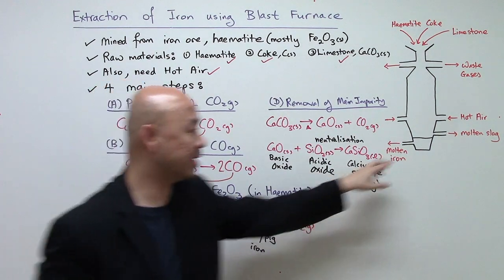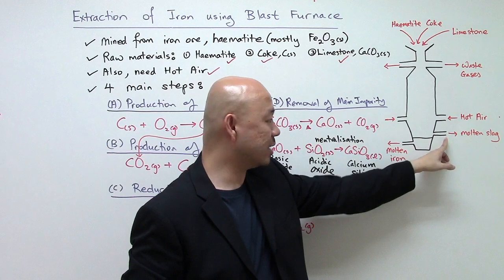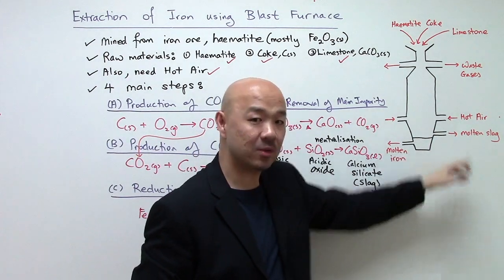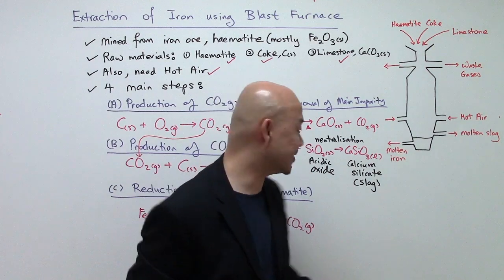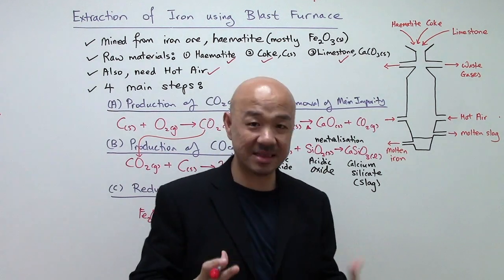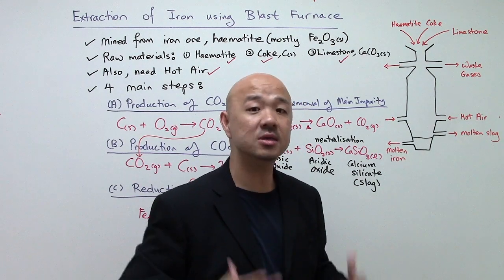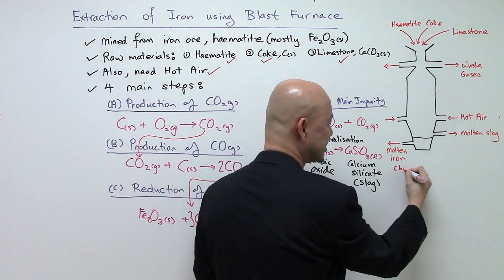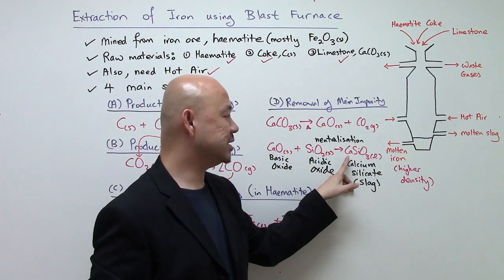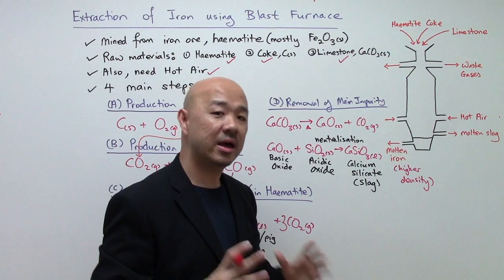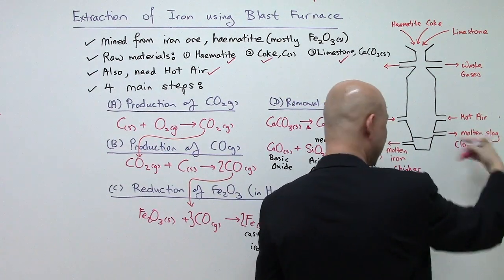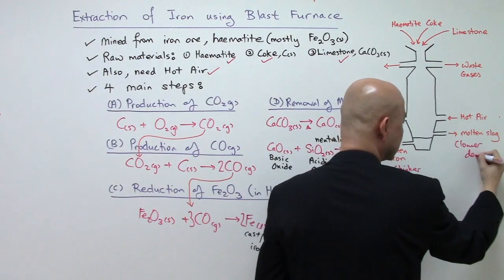Looking at the diagram, you'll notice that molten iron flows out of the blast furnace at a lower level than molten slag. This is to do with density. Molten iron is a metal — iron is a transition metal — so it has high density and sinks. Molten slag, CaSiO₃, is an ionic compound, and ionic substances tend to have lower density than metals, so slag is collected at a higher level of the blast furnace.